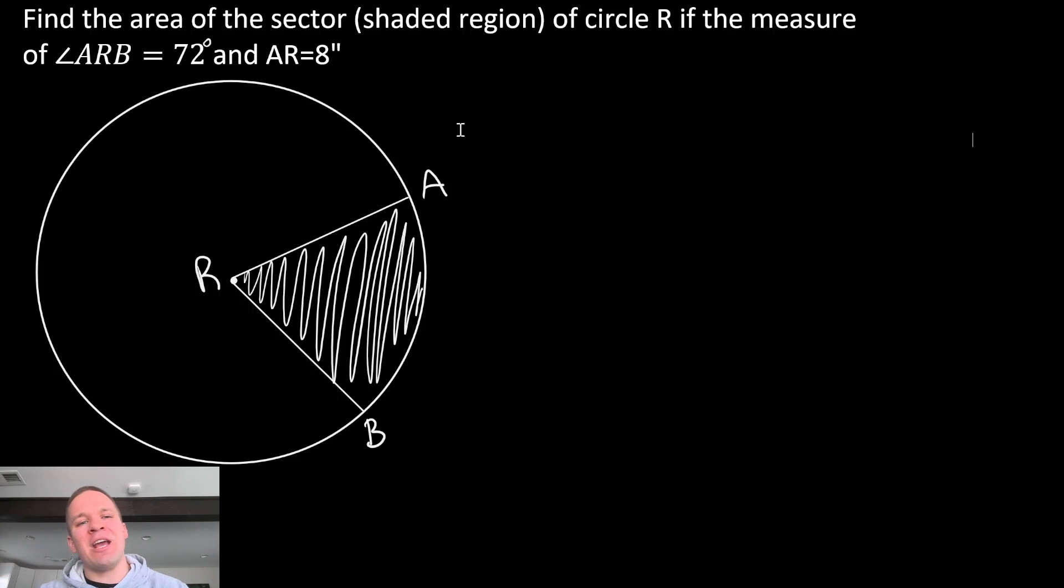What's going on, Mr. Allen here. We're gonna find the area of the sector of circle R if the measure of angle ARB, that central angle, is 72 degrees and AR, that radius of that circle, is eight inches.